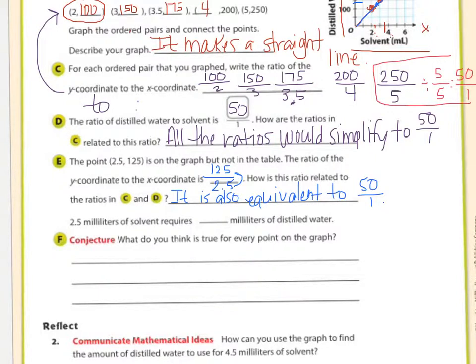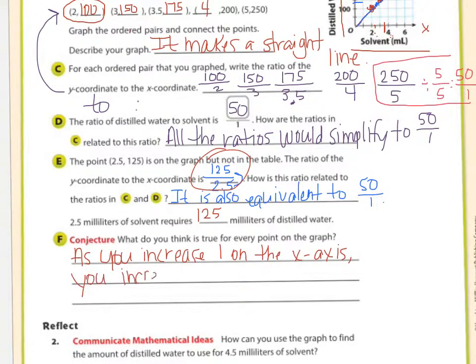2 and a half milliliters of solvent requires how many milliliters of distilled water? How many did it say right here? It requires 125. What do you think is true for every point on the graph? As you increase, that means go up, 1 on the X axis, you increase how many on the Y axis? You increase 50 on the Y axis.